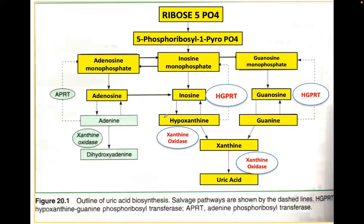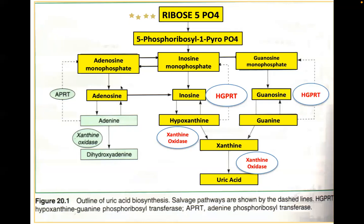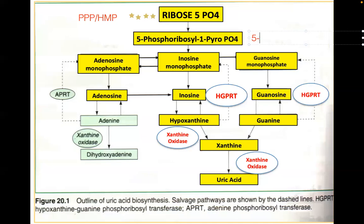Ribose 5-phosphate comes from the pentose phosphate pathway or hexose monophosphate shunt. Ribose 5-phosphate is converted to 5-PRPP (5-phosphoribosyl pyrophosphate). 5-PRPP is then converted to IMP, or inosine monophosphate. IMP is converted to hypoxanthine.